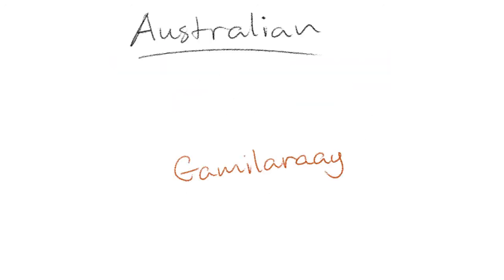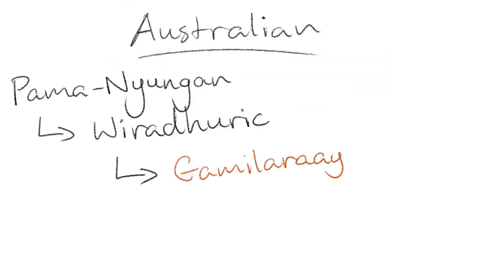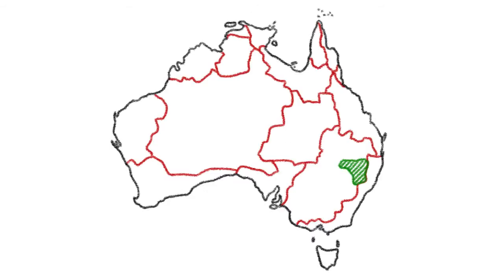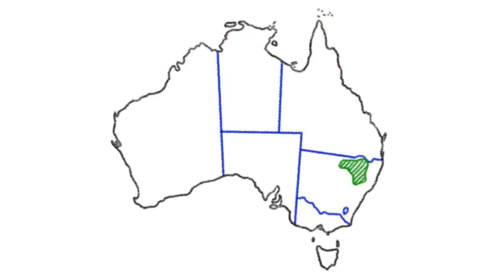Gamilarai is an Australian language belonging to the Wiradaric branch of the Pama-Nyungan language family, along with Ngiumba and of course Wiradjuri. It is traditionally spoken by the Gamilarai people in the Gamilarai nation, located in the Riverine region in the central north-eastern area of the state of New South Wales.